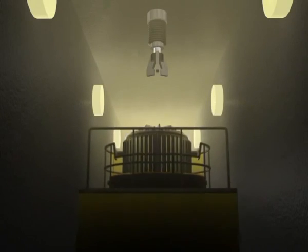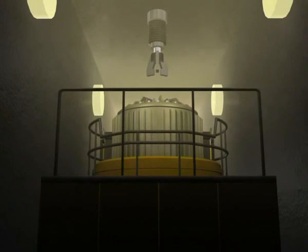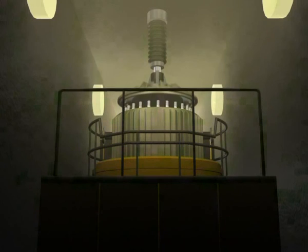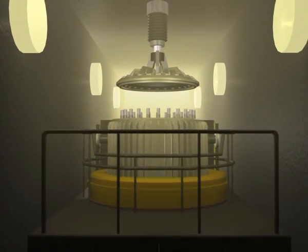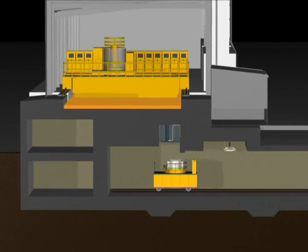The container arrives through the transfer corridor under the lid lifting device, where the lid is removed. Then it stops under the drying tube.